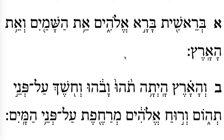The first step in learning to trope a verse is to read the verse in Hebrew. So we'll start with the first verse: Bereshit, which means 'in the beginning.' Bara, 'created.' Elohim, 'God.' Et ha-shamayim, 'the heavens.' Ve-et ha-aretz, 'and the earth.'